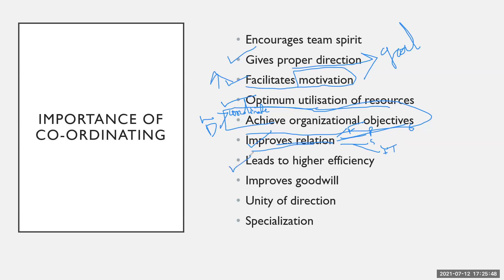Coordination leads to higher efficiency. When one person tries to achieve a goal, a second person helps, and so on. Everyone does their work well, leading to higher efficiency in the organization — higher efficiency, higher productivity, and higher profitability. If everyone works well, the organization's profit also improves. Coordination also improves goodwill — the reputation of the organization rises because employees are working hard and dedicating themselves to the organization's goals.